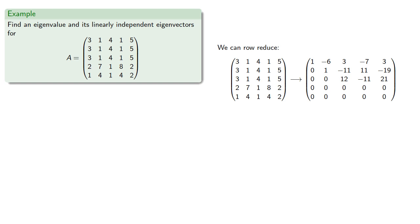Since there are five variables and only three non-zero rows, this means there are three basic variables and two free variables.